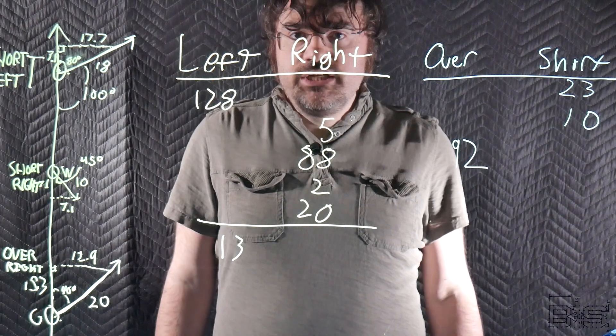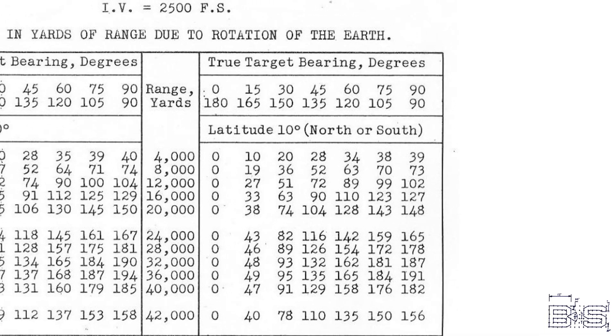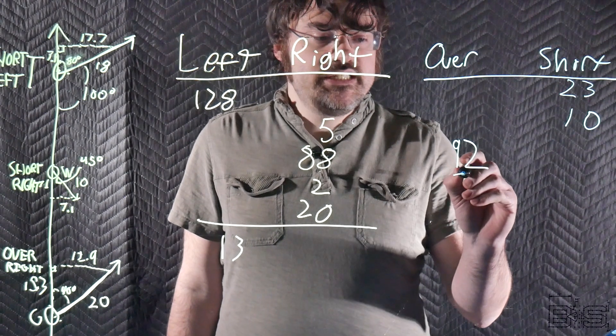Now let's account for rotation of the earth. If we look at our earth rotation table for 10 degrees, we see that the mean of 63 and 89 is 76. So that's 76 over.